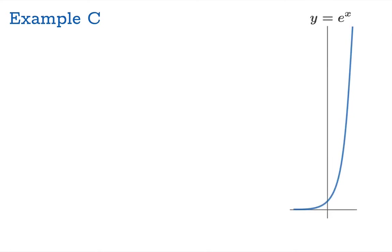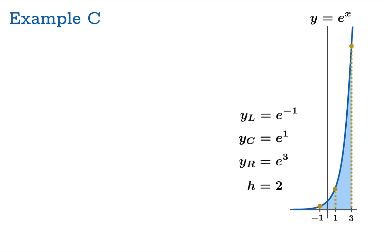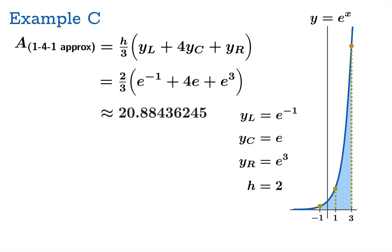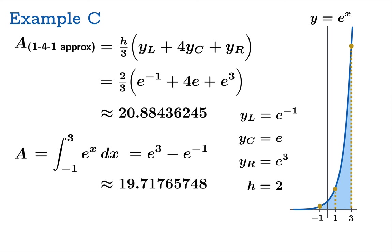Let's look at the third example: the exponential function e^x, using the 1-4-1 approximation for the signed area from −1 to 3. The total width is 4, so the midpoint is 1 and the half width is 2. The function values are e^(−1), e^1, and e^3. Plugging into our template gives an approximation of about 21.88. The actual area is the integral of e^x from −1 to 3, which by the fundamental theorem is e^3 minus 1/e, approximately 19.7177. The relative error is almost 6%.